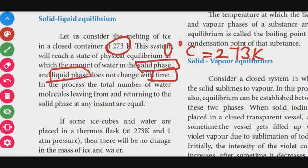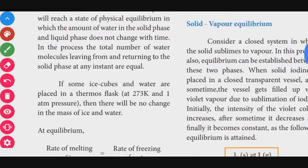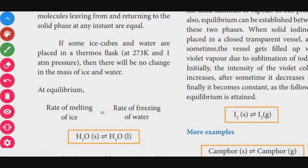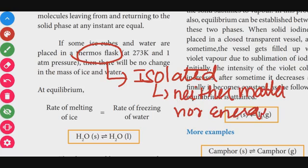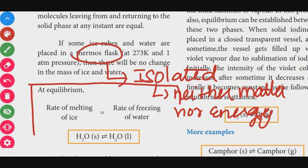The total number of water molecules leaving and returning to the solid phase are equal. If some ice cubes and water are placed in a thermos flask, there will be no change. A thermos flask is an isolated system — neither matter nor energy can be exchanged. At equilibrium, the rate of melting of ice is equal to the rate of freezing of water.